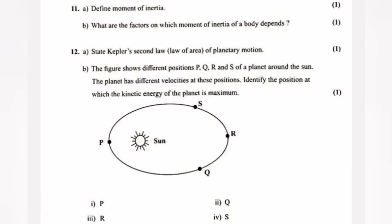Question 12: (a) State Kepler's second law, law of area of planetary motion. (b) The figure shows different positions P, Q, R, and S of a planet around the sun. The planet has different velocities at this position. Identify the position at which the kinetic energy of the planet is maximum. Answer: 1. P.